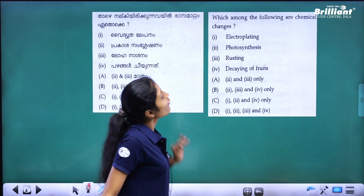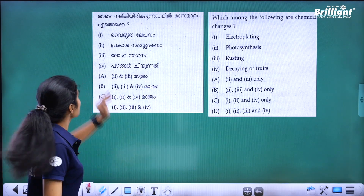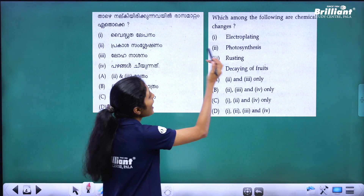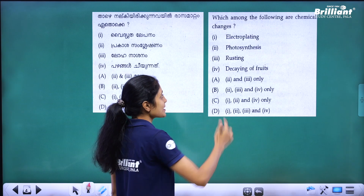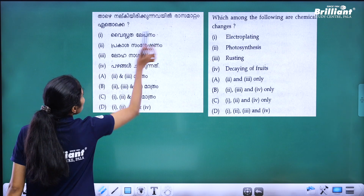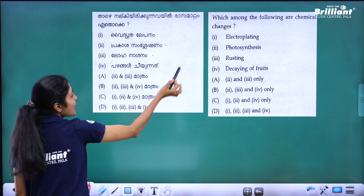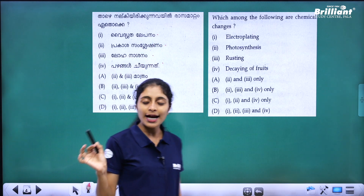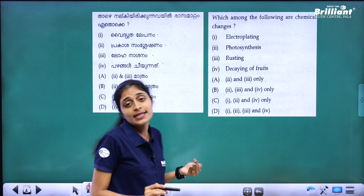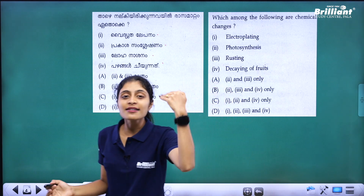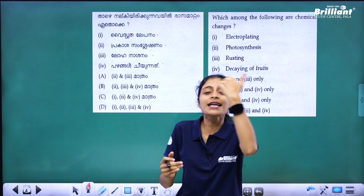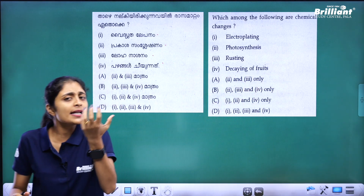Next: which among the following are chemical changes? The options include electroplating, photosynthesis, and decaying of fruits. All of these are chemical changes because they result in the formation of different substances.